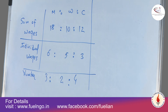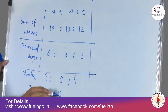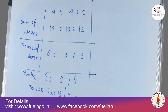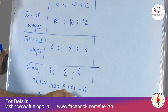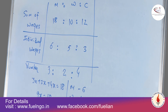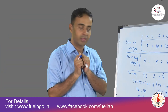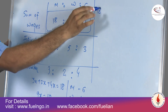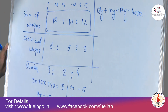The ratio of men, women, and children is 3:2:4, and their total is 18. So 3x + 2x + 4x = 18, giving 9x = 18, so x = 2. Number of men = 6, women = 4, children = 8. Together they earn ₹4000, so using the wages ratio: 18y + 10y + 12y = 4000.